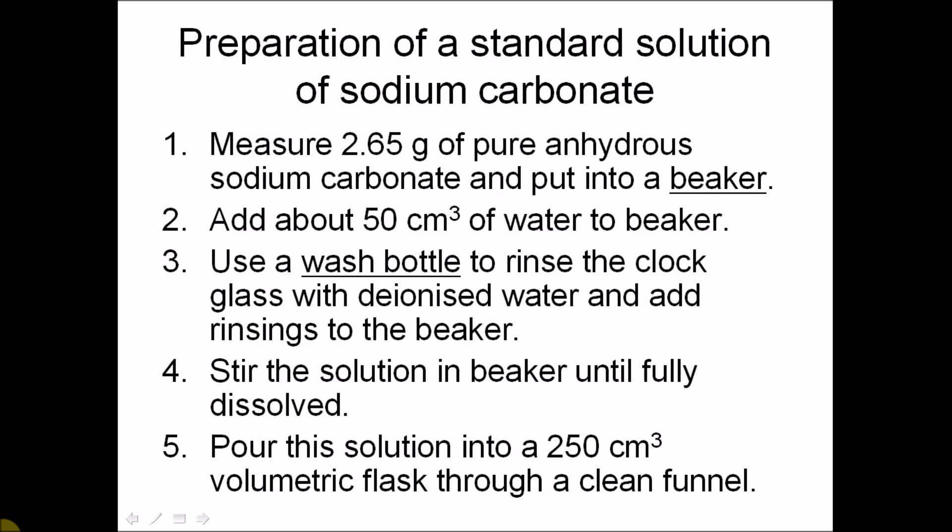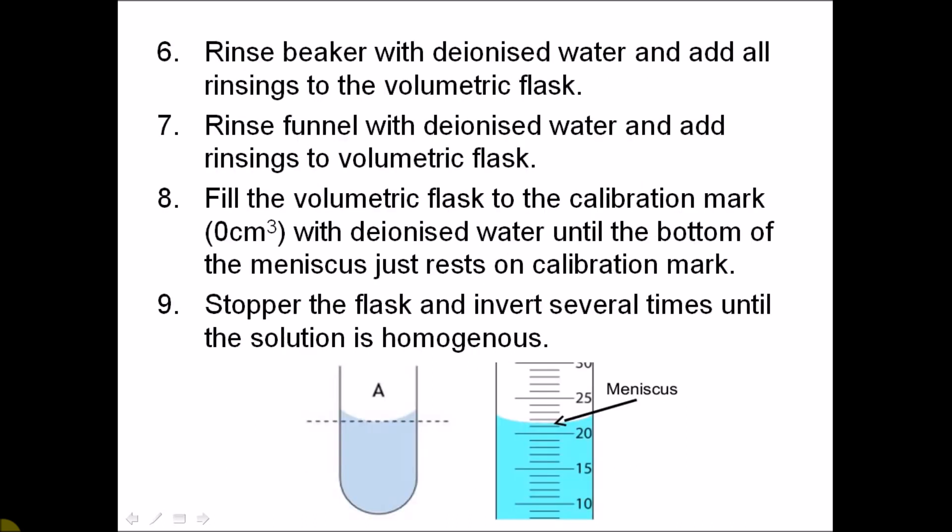The aim of this experiment is to accurately make a solution that you know the precise concentration of. You put 2.65 grams of sodium carbonate into a beaker and dissolve it with 50 ml of water. If the sodium carbonate gets into contact with any of your apparatus, wash that piece of equipment and put the rinsings into the solution. Pour the contents from the beaker into a volumetric flask, rinse the beaker with deionized water and add the rinsings to the flask. Fill the volumetric flask with deionized water until the bottom of the meniscus is at the 250 cm³ mark. Invert the flask until the solution is homogenous — evenly mixed. You've just made a 0.1 molar sodium carbonate solution.